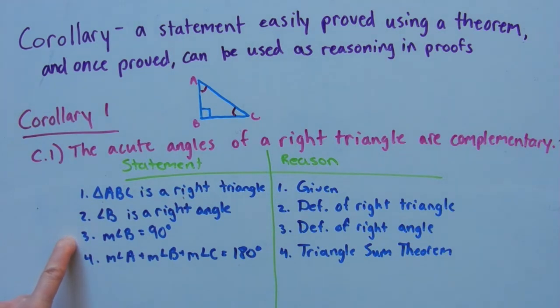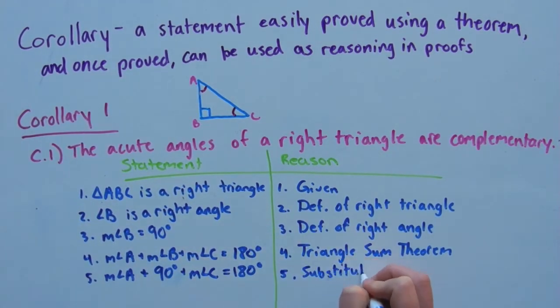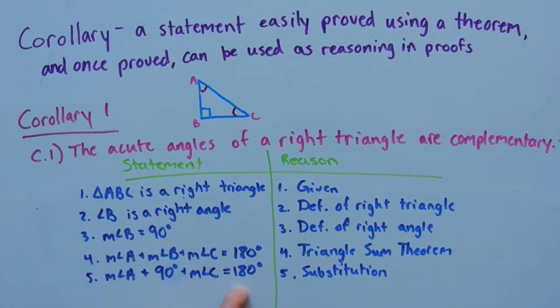But from step 3, we know what the measure of angle B is equal to. Let's just substitute 90 degrees in for the measure of angle B in this equation. And because of the subtraction property, we're able to take 90 degrees away from both sides of the equation.